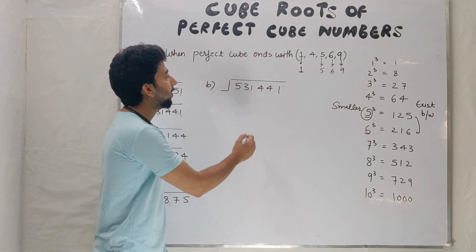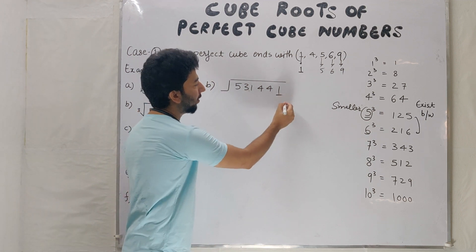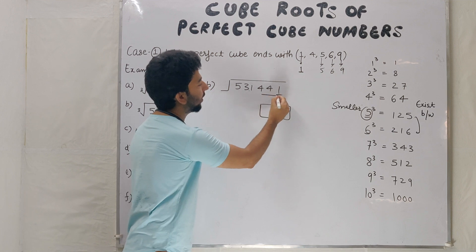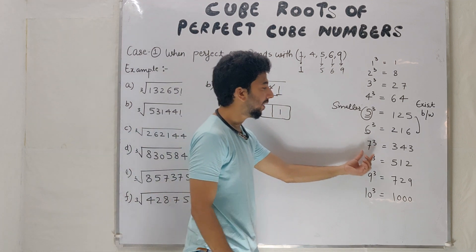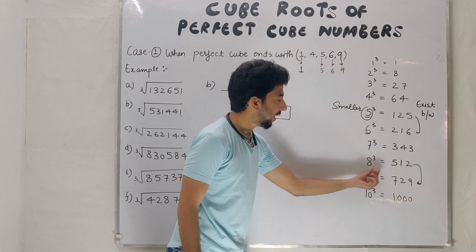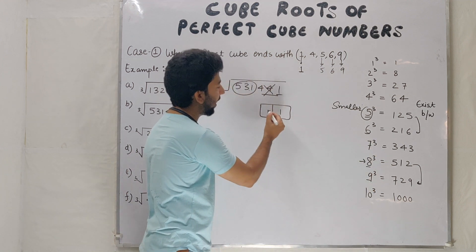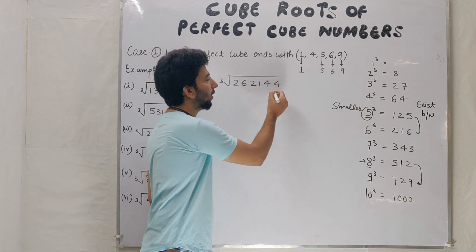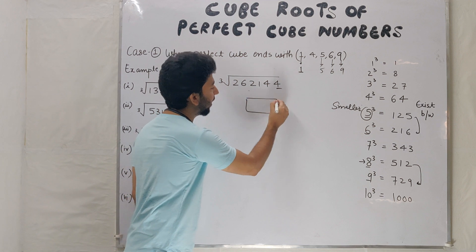Example number 2: 531441. Cancel out the last three digits. We have 531. Between 512 and 729, which are cubes of 8 and 9. Smaller one is 8, so 81.